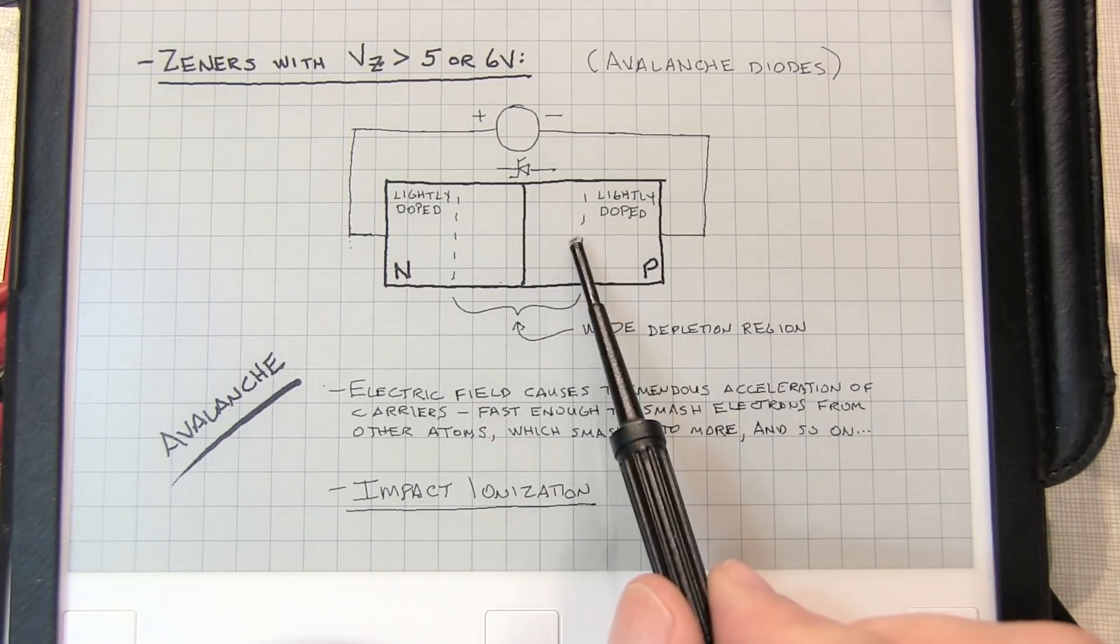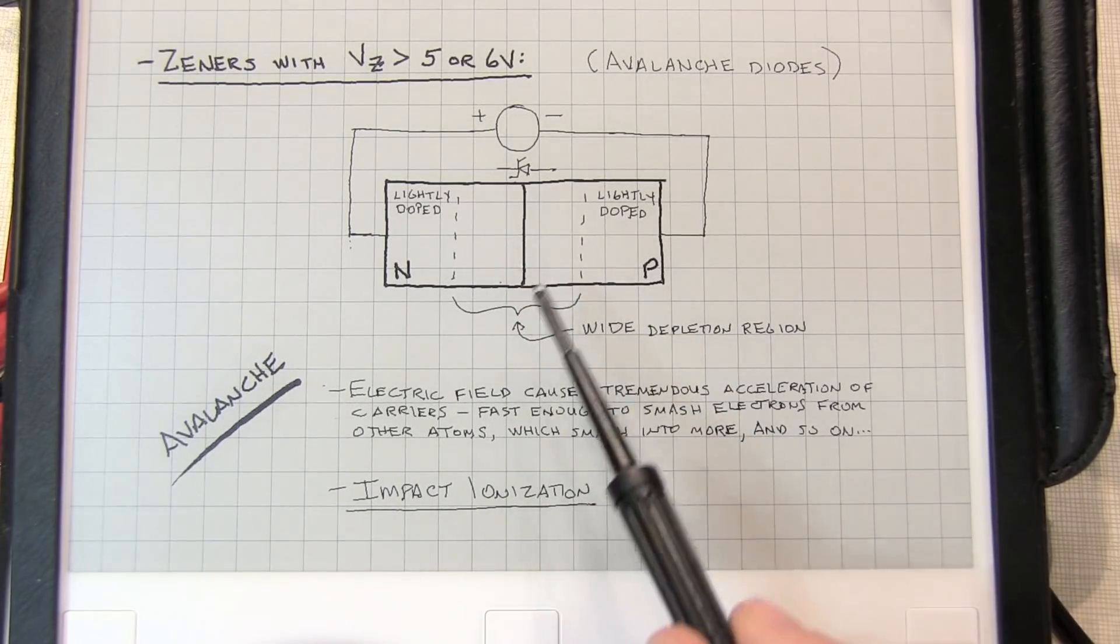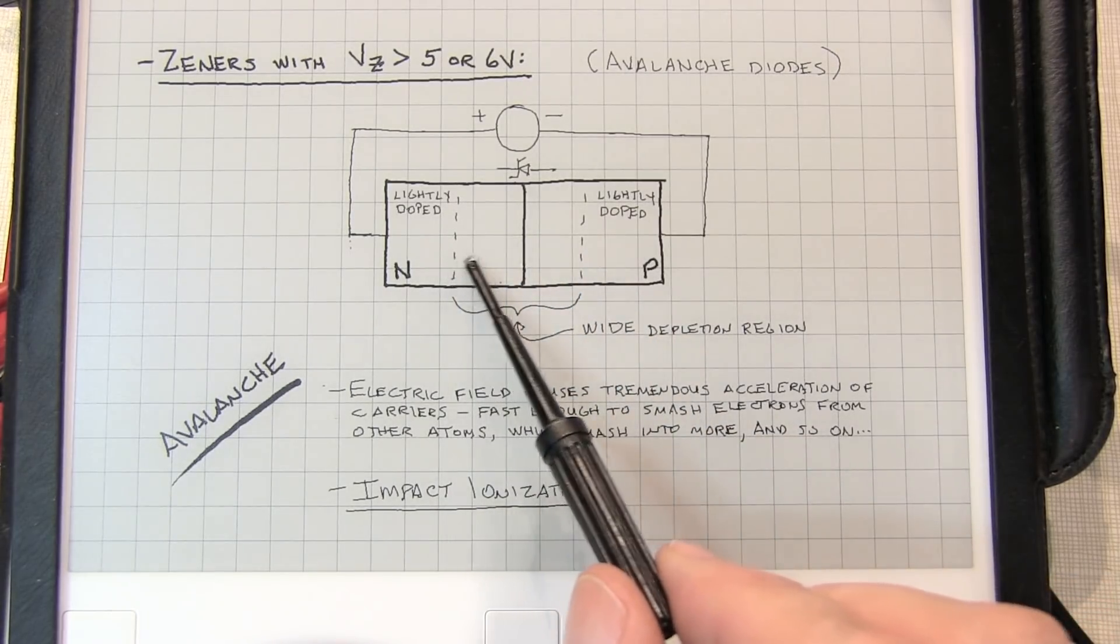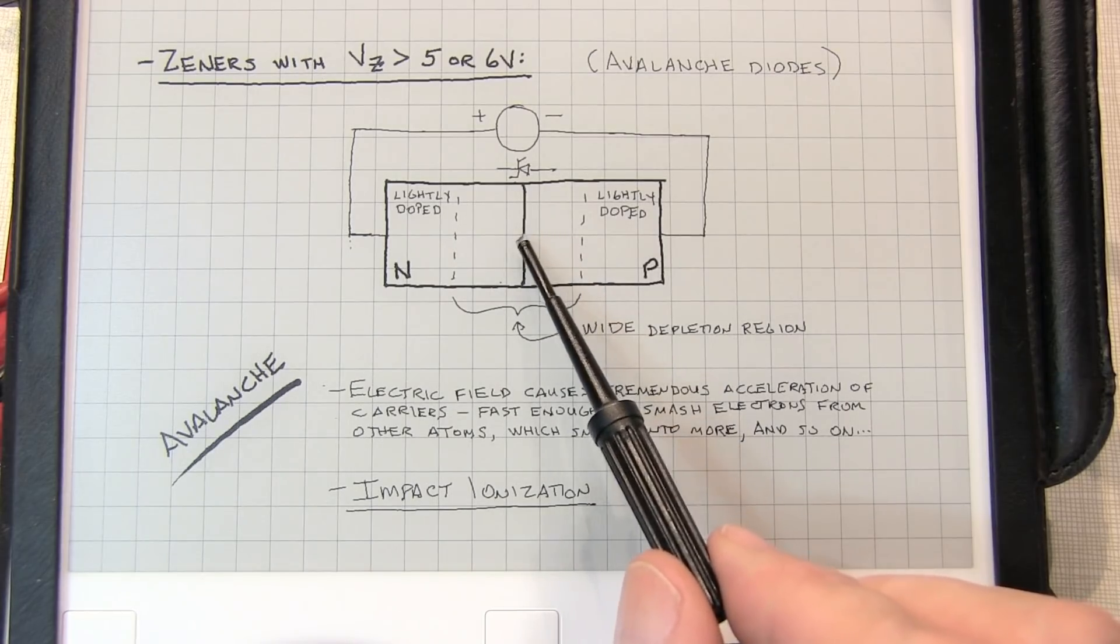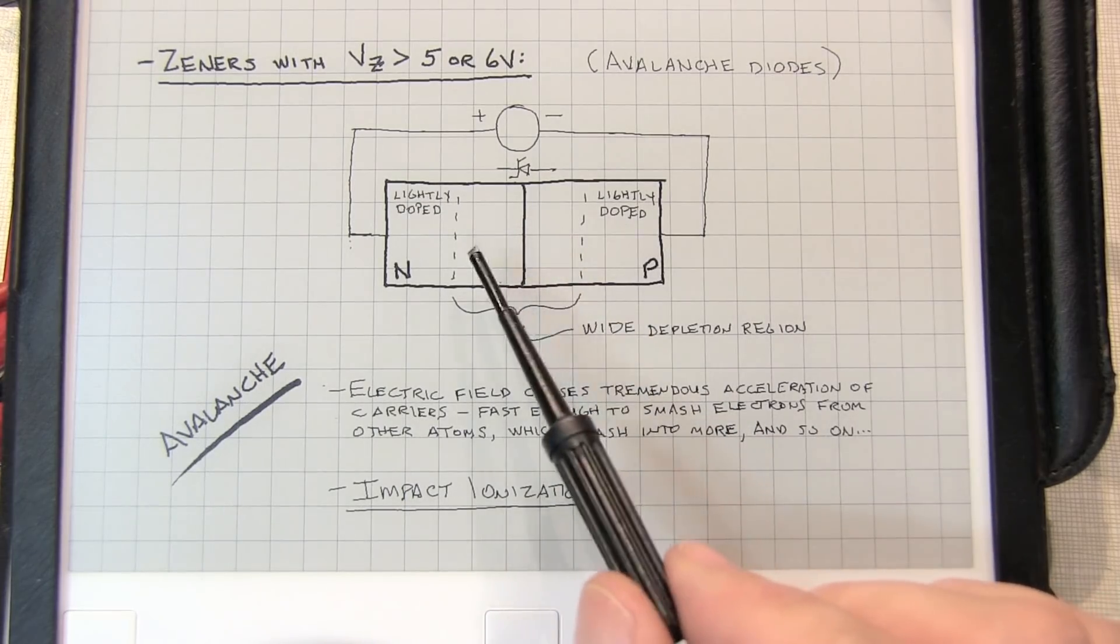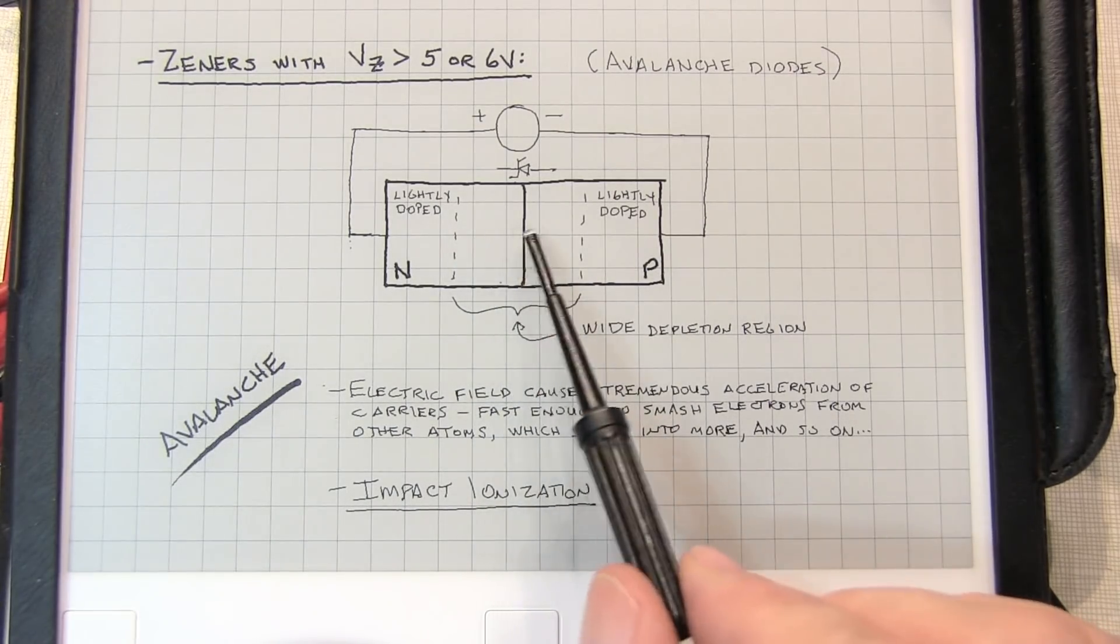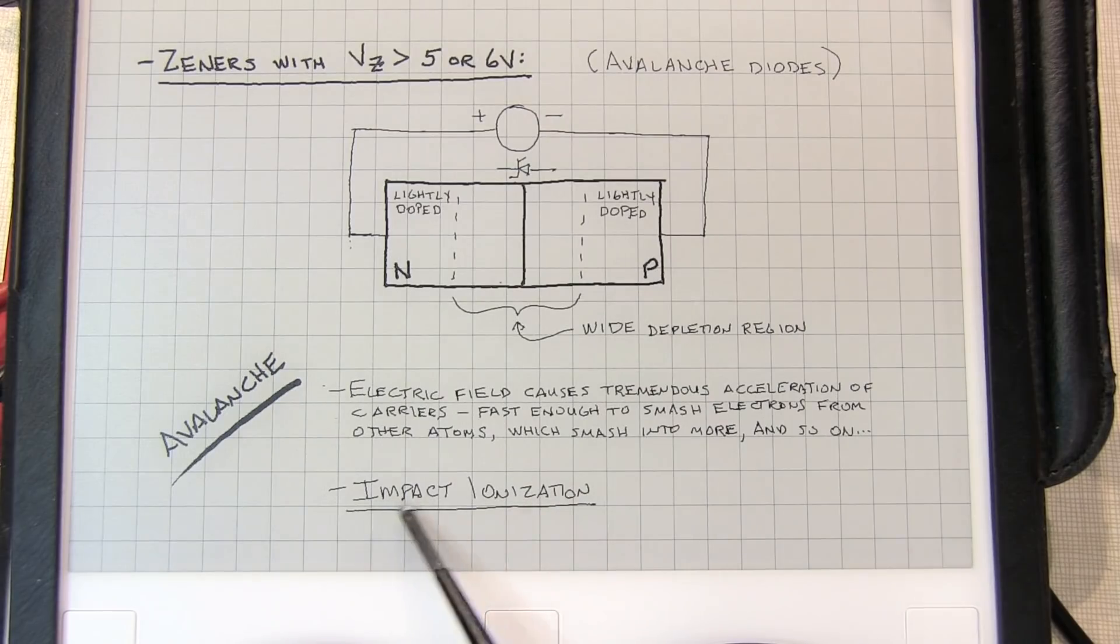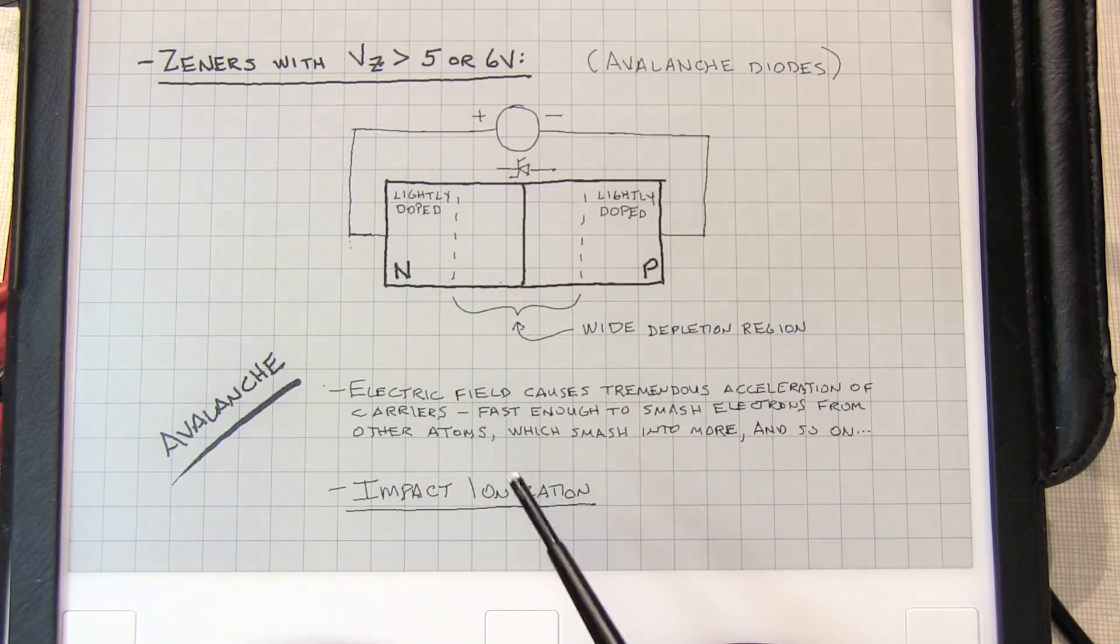Because those carriers that are in this depletion region are exposed to this electric field for a long time, they accelerate to very fast velocities. They go so fast that they can smash into other atoms and free electrons from those atoms. Those electrons also get accelerated by the electric field and smash into more atoms. You get this avalanche effect that can cause a small amount of carriers from one side to result in a very large total amount of current. You get this impact ionization type mechanism, kind of like an avalanche of snow down the side of a mountain.